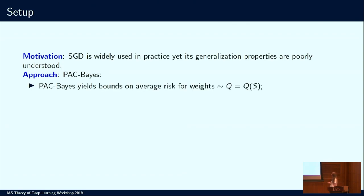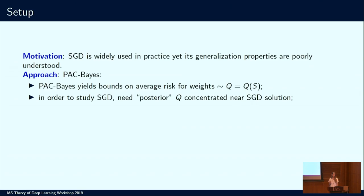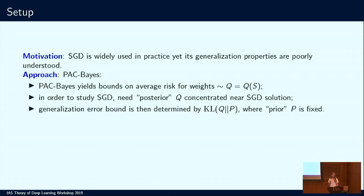PAC-Bayes yields bounds on average risk for weights sampled from some data-dependent distribution Q. In order to study stochastic gradient descent, we need the posterior Q to be concentrated near the SGD solution, to de-randomize the bounds and get a bound on the deterministic classifier of SGD rather than this randomized classifier Q. Generalization bound is then determined by the KL divergence between Q and some fixed prior P. The prior P here is not a Bayesian prior — the word prior mostly refers to the fact that the prior is evaluated on data that was not used to evaluate the bound itself.